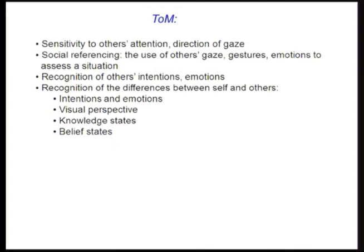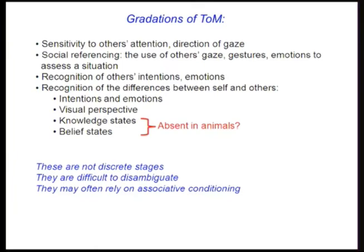When we talk about an organism having a theory of mind, we're talking about something as elemental as sensitivity to others' attention and direction of gaze, social referencing, recognition of others' intentions and emotions, recognition of the difference between yourself and others. There's been a huge industry trying to determine whether this is unique to human behavior, with some suggestion that having a theory about another organism's belief states — whether it has false beliefs — is unique to humans. But this is fraught with difficulty, because theory of mind is not an all-or-nothing ability.